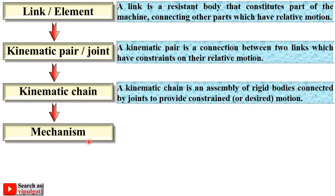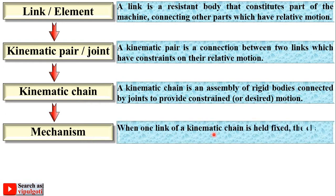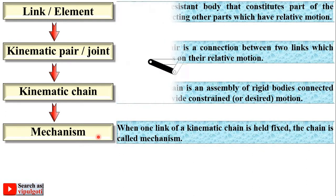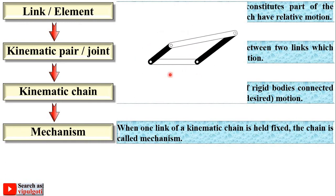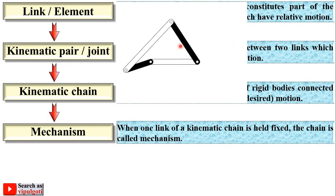Next, mechanism. When one link of the kinematic chain is held fixed, the chain is called mechanism. That means in kinematic chain, if you fix any one link, then it is called mechanism. Here there are four bars, and among these, this one is fixed, so it is called the mechanism. You can say it is a four-bar mechanism.